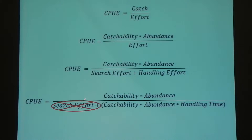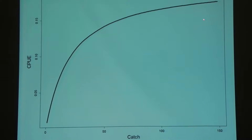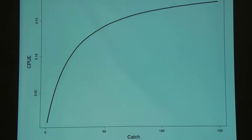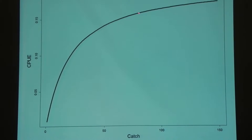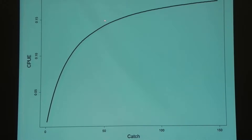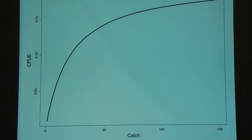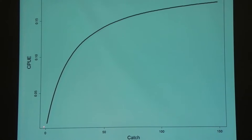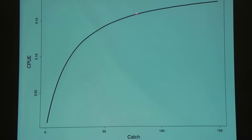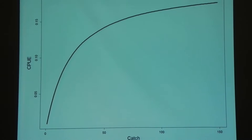You may recognize this if you've read about hyperstability: while your catch is increasing steadily, your CPUE is leveling off. This can be a big deal. Say you catch 100 fish one year and CPUE is high. The next year you catch 50 fish — CPUE looks kind of the same, but you just lost 50% of your catch. Then the year after that it falls off really fast. Things seemed stable, then dropped suddenly. Understanding this process is really important.